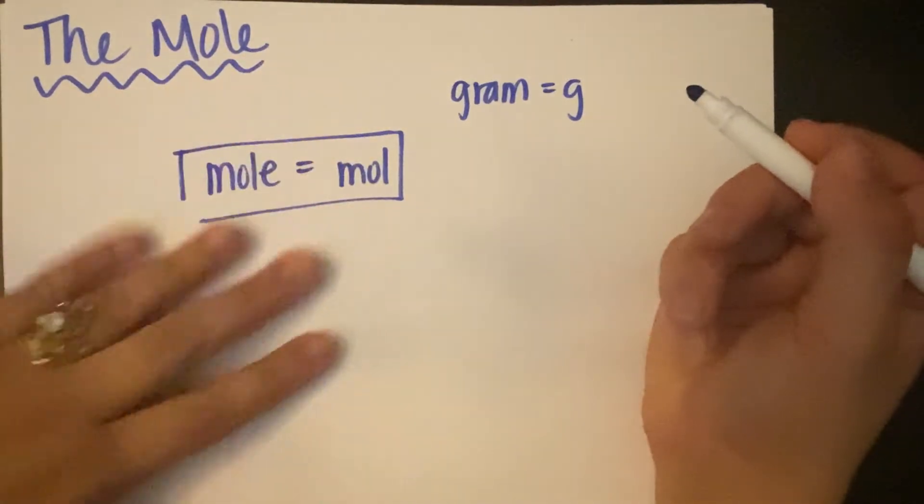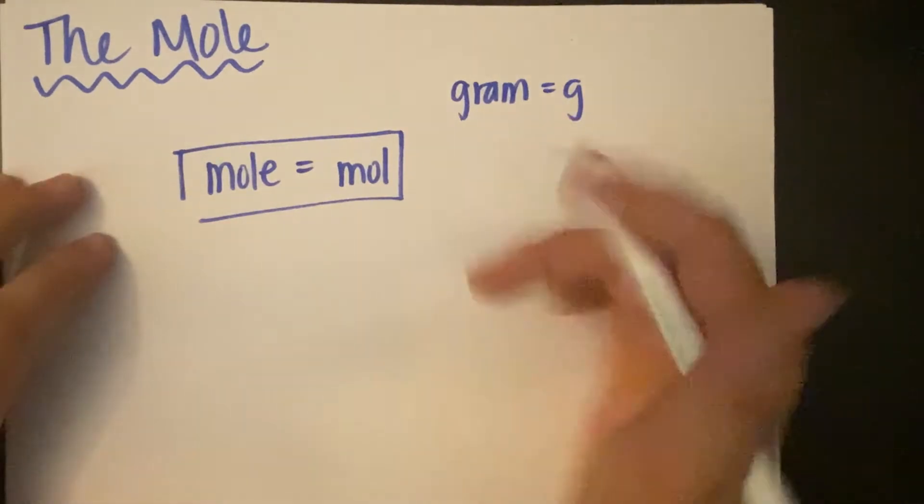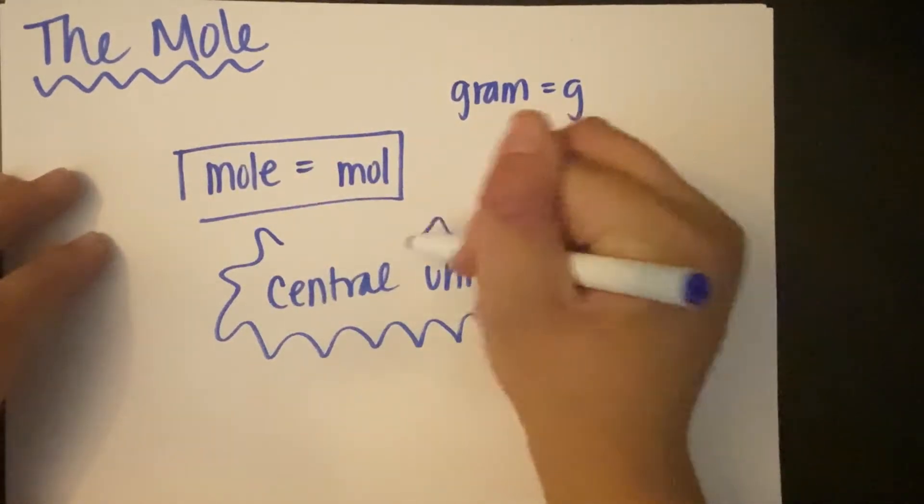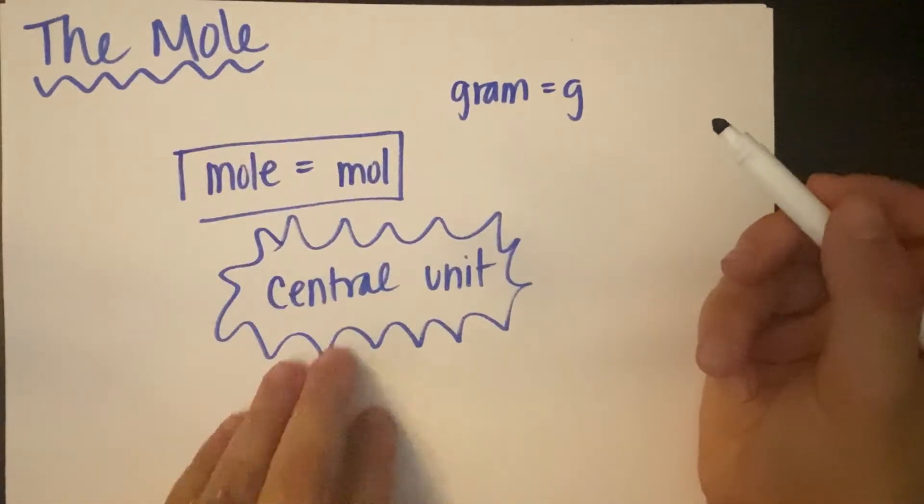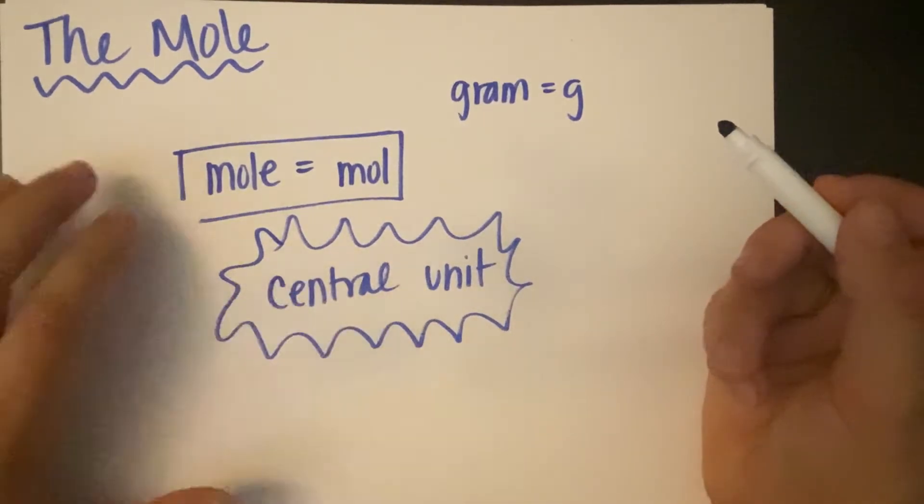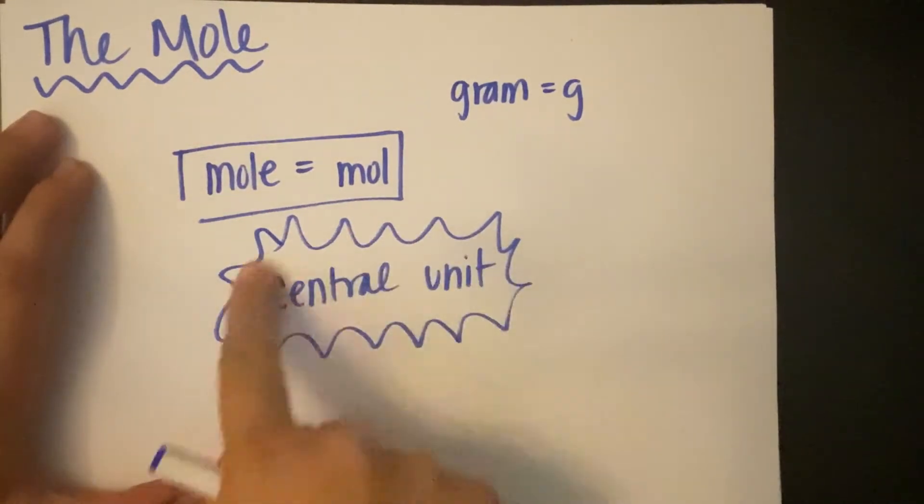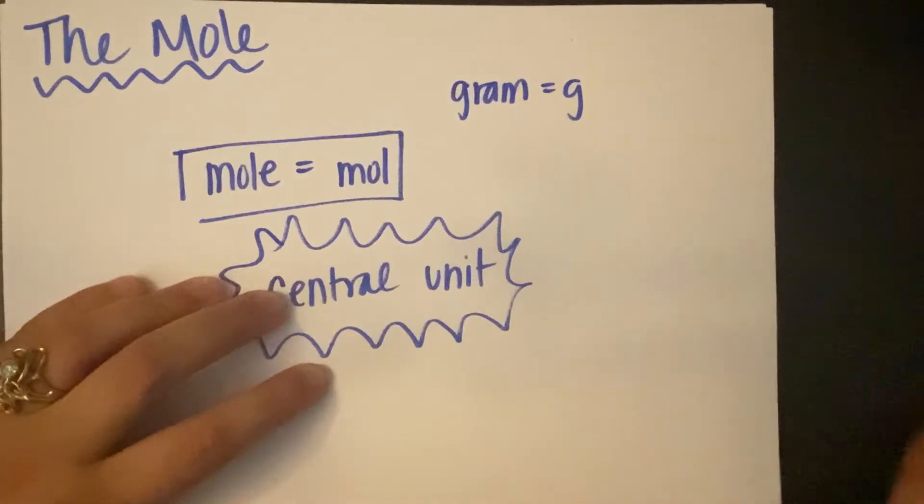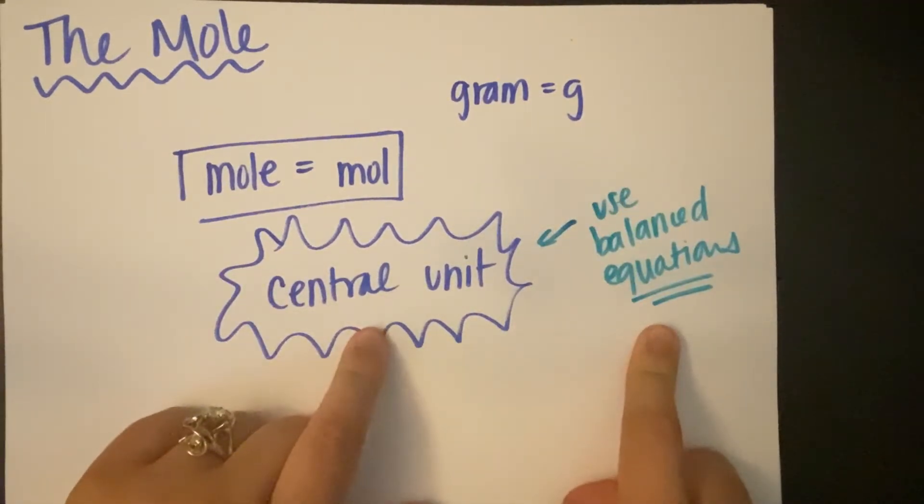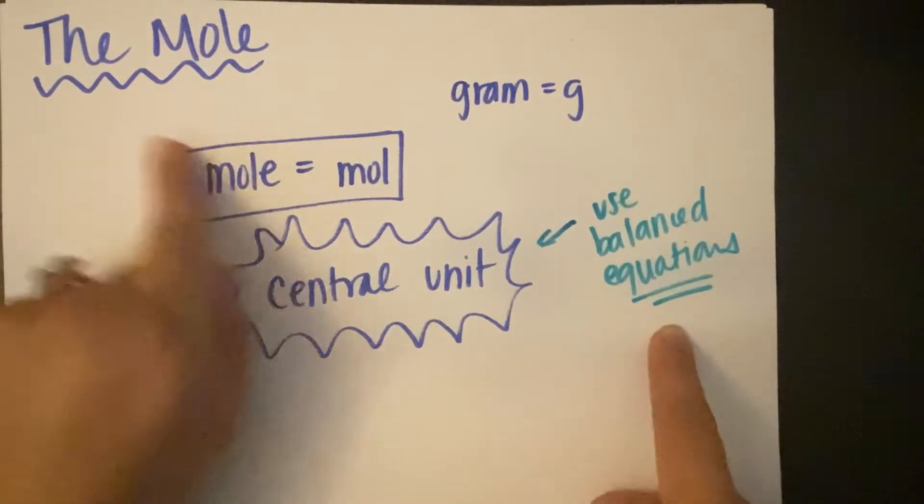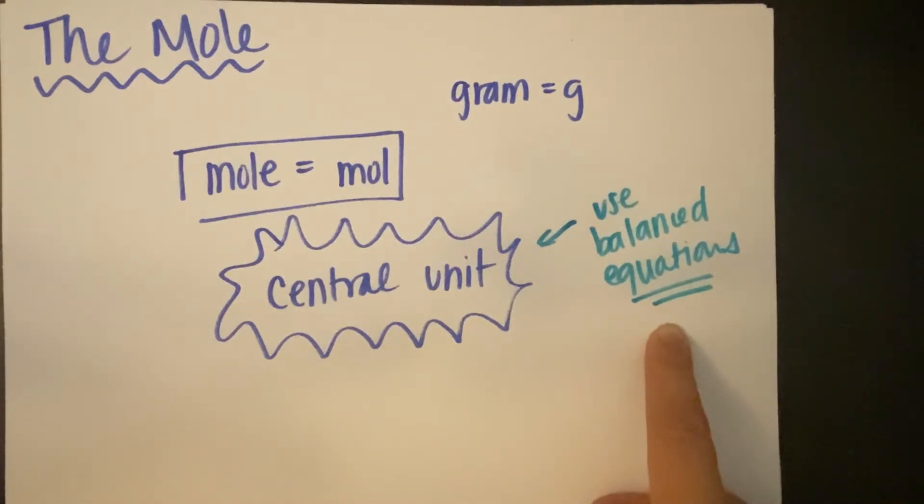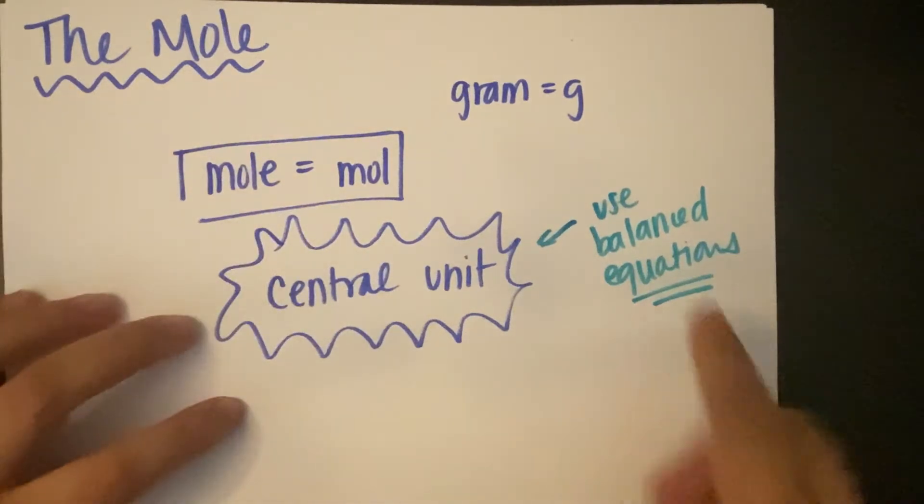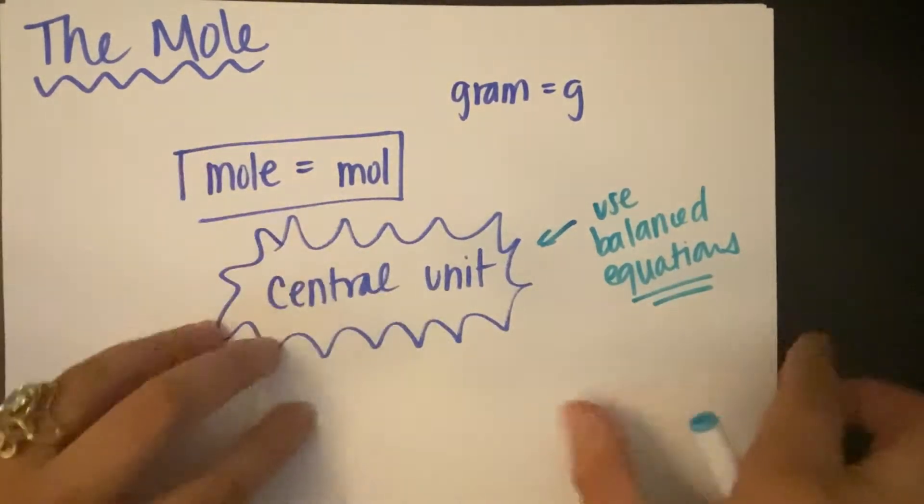I'm trying to think of a different way to describe the mole, and the way I like to think about it is really just it's the central unit. So the mole is the central unit for all of your chem stuff. No matter what unit you start in, you're going to want to convert it into the mole. It's your kind of universal unit. Once you are in your central unit, in your mole, then you can use your balance equations. Your coefficients from your balanced equations.